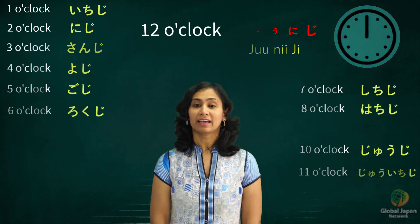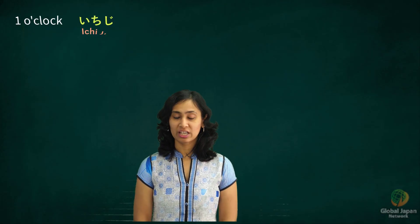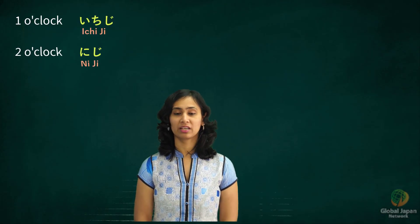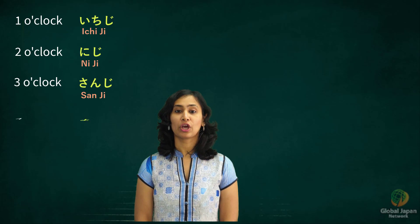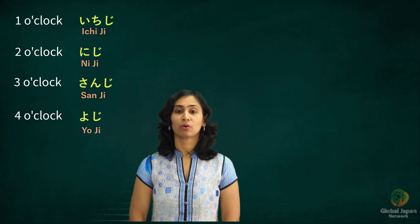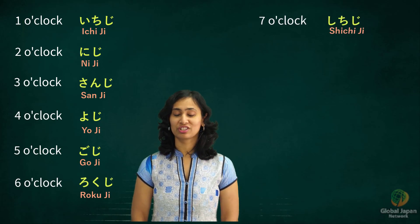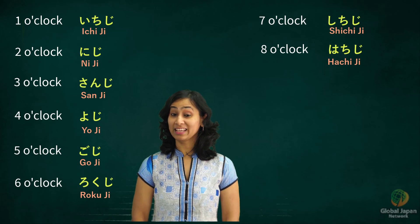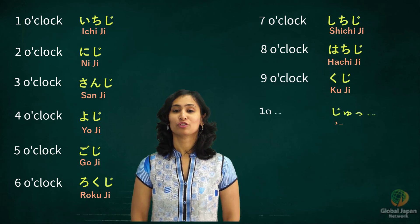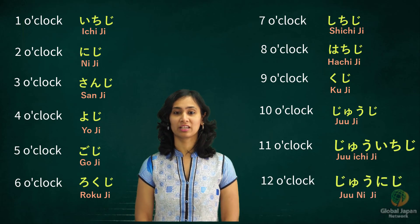Can we go over them faster now? From Ichiji, Niji, Sanji, Yoji, Goji, Rokuji, Shichiji, Hachiji, Kuji, Juji, Juichiji, Juniji.